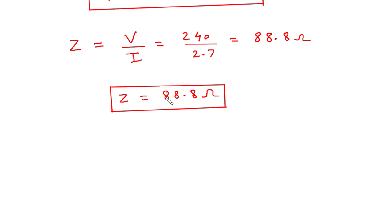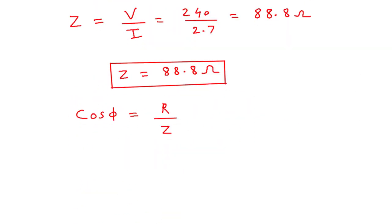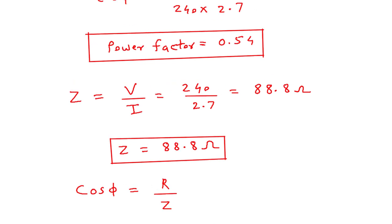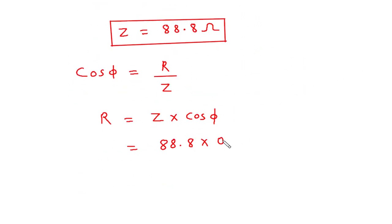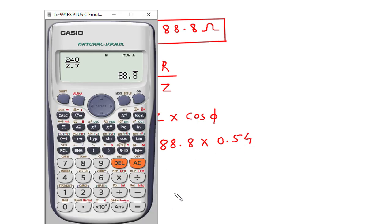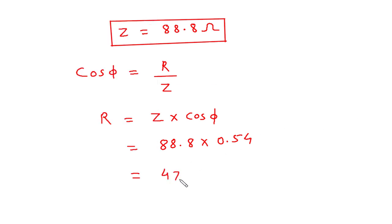Next, from the impedance we can find the value of R, because cos phi = R / Z. We have cos phi = 0.54 and Z = 88.8. So R = Z × cos phi = 88.8 × 0.54 = 47.95 ohm.